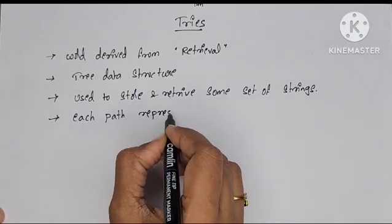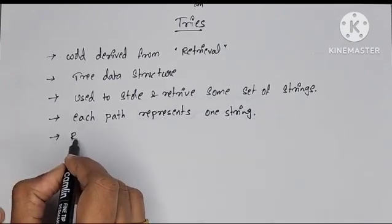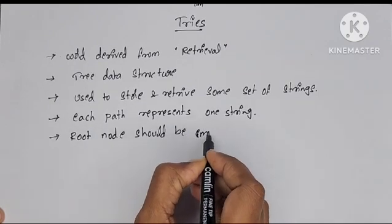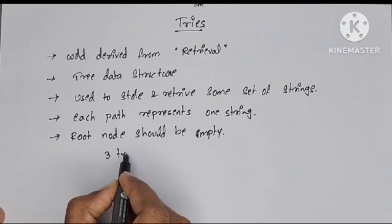Each path from root to leaf, whenever we traverse, each path represents one string. When we are going to store strings, always the root node should be empty.